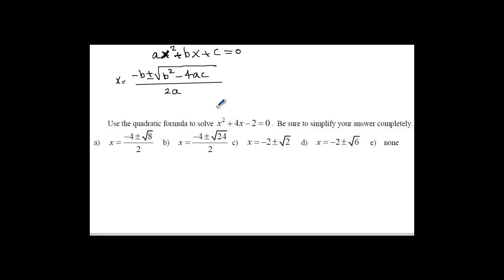In this case, your a is equal to 1, that's the coefficient of x². Your b is the coefficient of x, which is 4, and c is the constant here, negative 2.